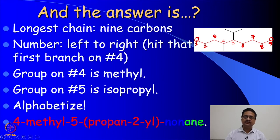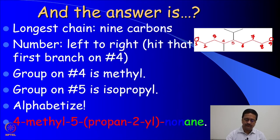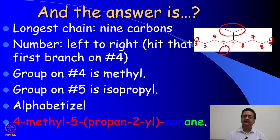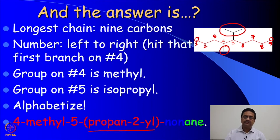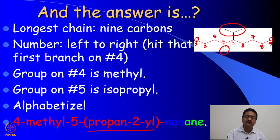It means that the molecule is a 9-carbon hydrocarbon and it is called nonane. Now we need to find out the substitutions that are present. There are 2 groups attached: one is at number 4, a methyl group, and the other at number 5, which is a propan-2-yl or isopropyl group. So the name of that molecule will be 4-methyl-5-propan-2-yl nonane.